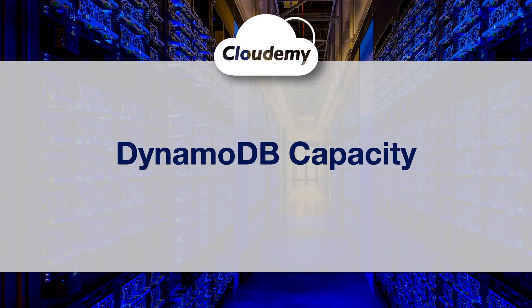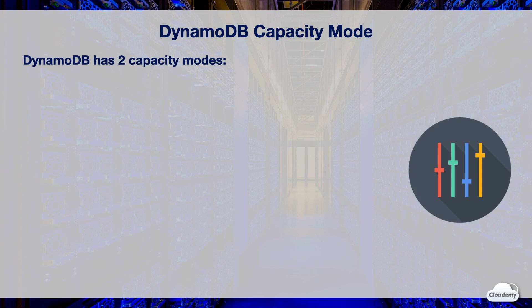Hey guys, welcome back. I'm Jay. In this episode, we're going to look at the capacity of DynamoDB. DynamoDB offers two capacity modes for the read/write throughput on your tables. They are on-demand mode and provisioned mode. The capacity modes control how you are charged for the read/write throughput and how you can scale the capacity.